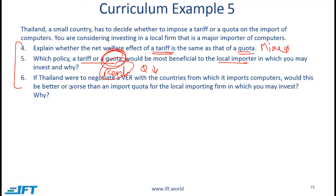If Thailand negotiates a voluntary export restraint with the countries from which it imports computers, would this be better or worse than an import quota for the local importing firm? The local firm will not benefit — all the benefit goes to the exporting firm, so generally this is not a smart arrangement for the importing country.